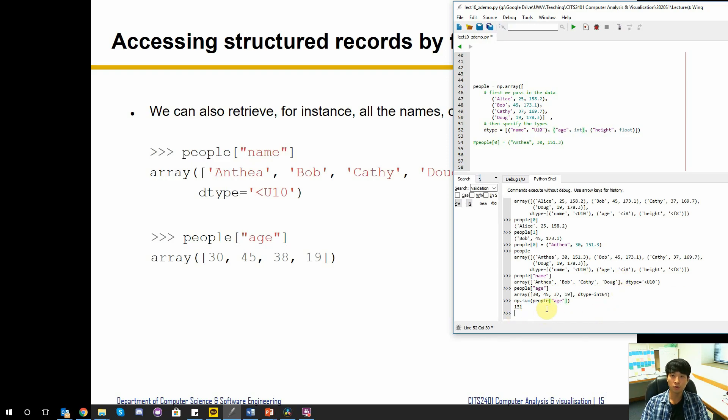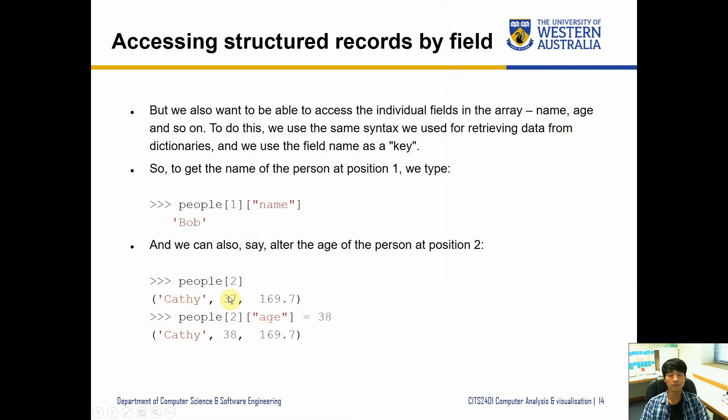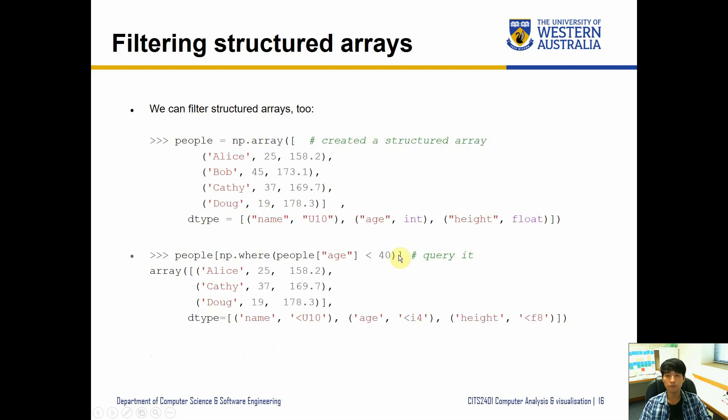Now we can easily do something like np.sum - what is the sum of everybody's age? People of age, we can do something like this and it's going to be 131. You can do all the operations that we have learned before about the NumPy functions and operators, and we can still store it in a structured format. You can update a specific field of the record as well, which is slightly different to normal Python tuple where you can't really change the content.